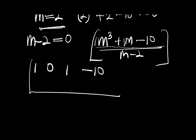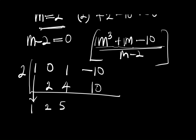From (m - 2) = 0, we have m = 2. We bring down the 1. Then 2 × 1 = 2; 0 + 2 = 2. Then 2 × 2 = 4; 1 + 4 = 5. Then 2 × 5 = 10; -10 + 10 = 0. The remainder is zero, confirming the division is exact.